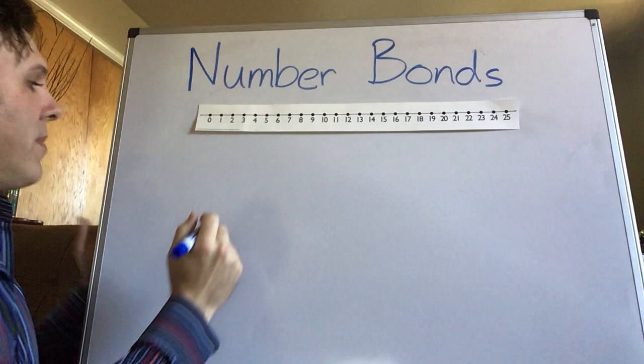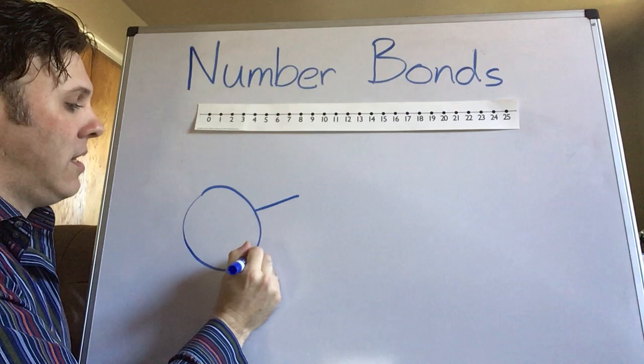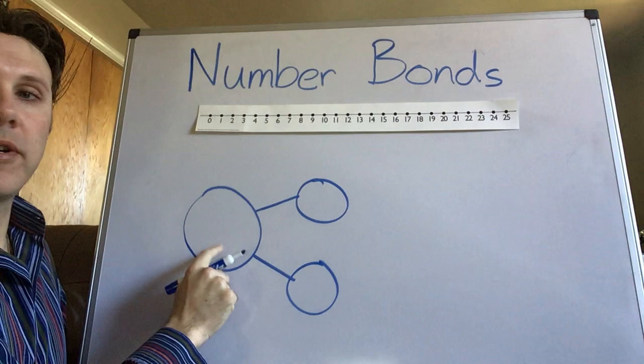Alright, so here we go. The first thing you see with number bonds is there's three circles. One and then there's two circles that come off of this one.